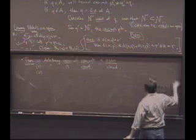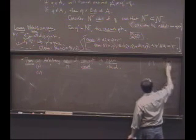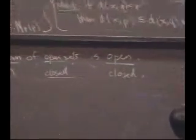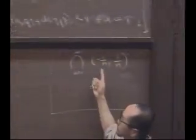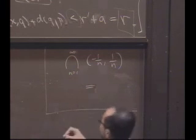So here's an aside. Check this out. If I take the intersection of minus 1 over n to 1 over n, n goes from 1 to infinity. The claim is that this is, what's inside every set from minus 1 over n to 1 over n?